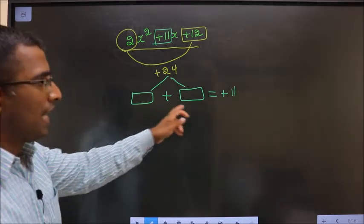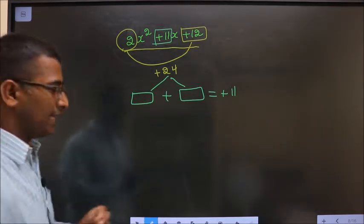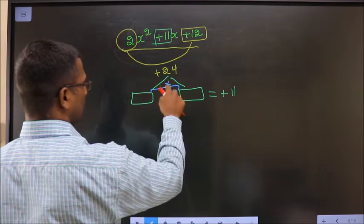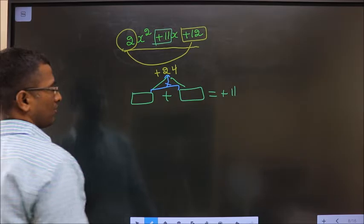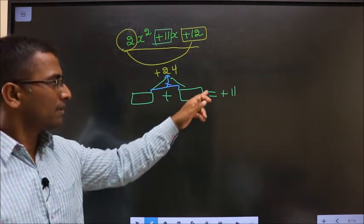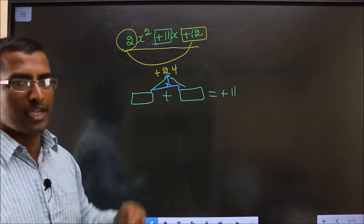Look out for 2 numbers such that when you add you should get plus 11, and when you multiply these 2 you should get plus 24. Two numbers such that when added plus 11, when multiplied you should get plus 24.